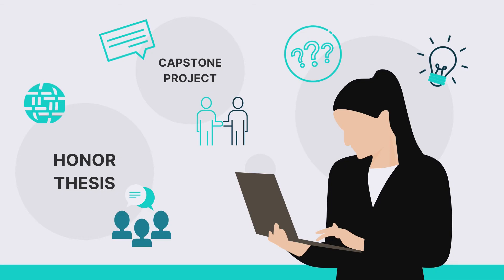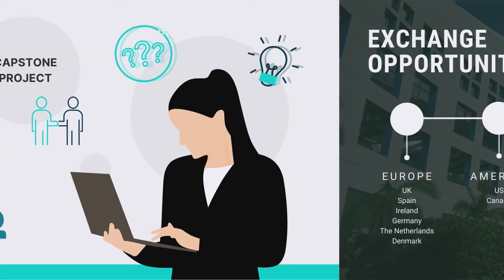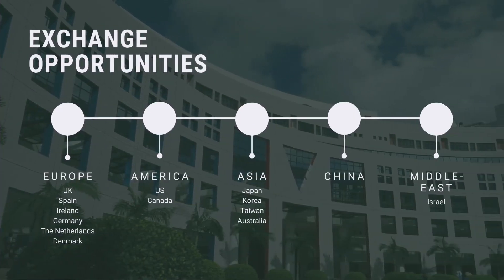One of the best ways to learn about China's place in the modern world is to spend time abroad. Eighty percent of our students in GCS spend at least one semester abroad. We have many prestigious partner institutions in fascinating parts of the world: UCLA, the University of Virginia, Sciences Po in Paris, Peking University, and Shanghai Jiao Tong University, just to name a few. Overseas experience is a key element of our major program, and it's something that our students find extremely rewarding and enriching.